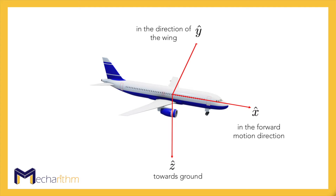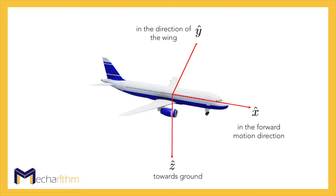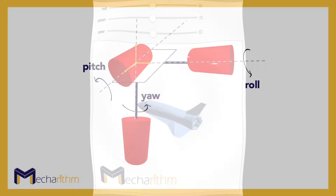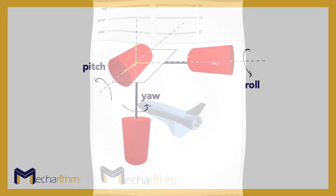The terms roll, pitch, and yaw are traditionally used to describe the rotational motion of a ship or an aircraft, where the roll is considered to be in the forward motion direction, the pitch is in the direction of the wing, and the yaw is towards the ground or upwards. You can visualize Roll-Pitch-Yaw rotations as you can see in the simulation. The same terminology is used in robotics — for instance, in industrial robots, the end effector's orientation can be obtained by a combination of the Roll-Pitch-Yaw angles.